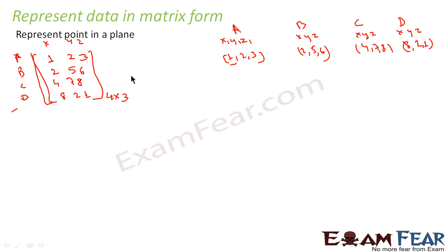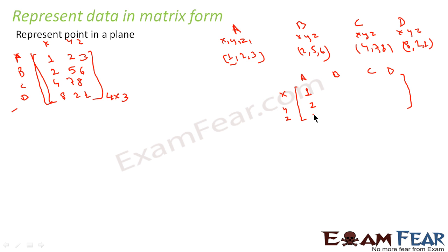You can also represent this matrix the other way around, where A, B, C, D are the columns and X, Y, Z are the rows. So for point A, X is 1, Y is 2, Z is 3; for B it is 2, 5, 6; for C it is 4, 7, 8; and for D it is 8, 2, 1. This gives us 3 horizontal and 4 vertical sets — a 3×4 matrix. Both are valid matrix representations for this data.